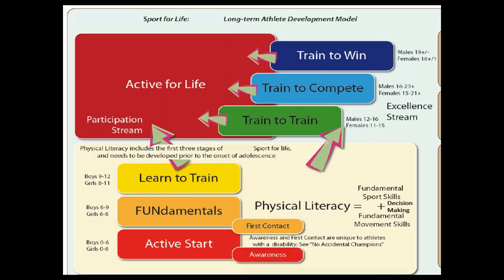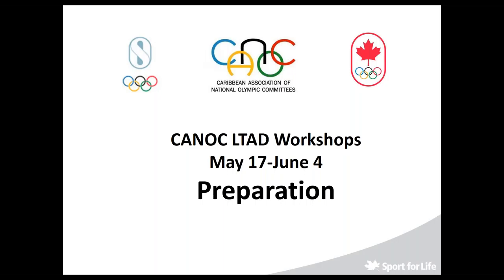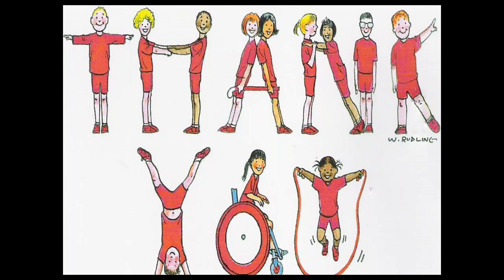The dynamic vision for the LTAD model shows physical literacy as the first stage — active start, fundamentals, learn to train — after which you have a choice: move to the participation stream or the excellence stream. If you choose excellence: train to train, train to compete, train to win, and you can retire to active for life. To participate in the participation stream, you must first develop physical literacy. In a nutshell, this is long-term development. I visited all six nations from May 17th to June 4th and discussed all these details in full-day sessions. Thank you very much — a quick summary delivered for the third time.